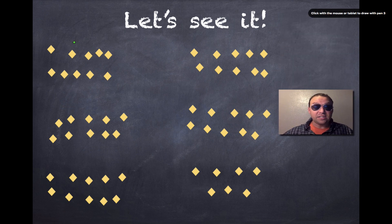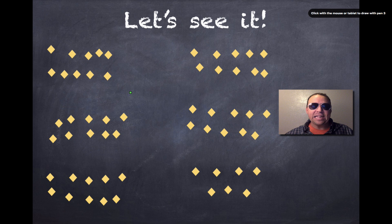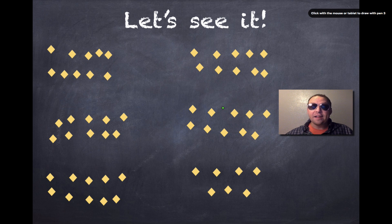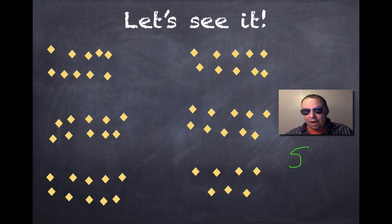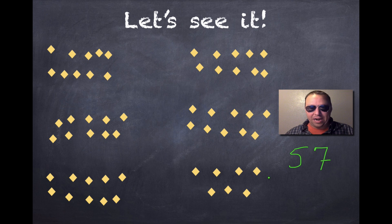So we've got — let's count up all these groups of 10: one, two, three, four, five groups of 10 and seven left over. Now let's use skip counting to see how many that is all together. Ready? 10, 20, 30, 40, 50 — then 51, 52, 53, 54, 55, 56, 57. Do you see how I skip counted by 10s for each group of 10, and then counted by ones once I got to my leftovers?